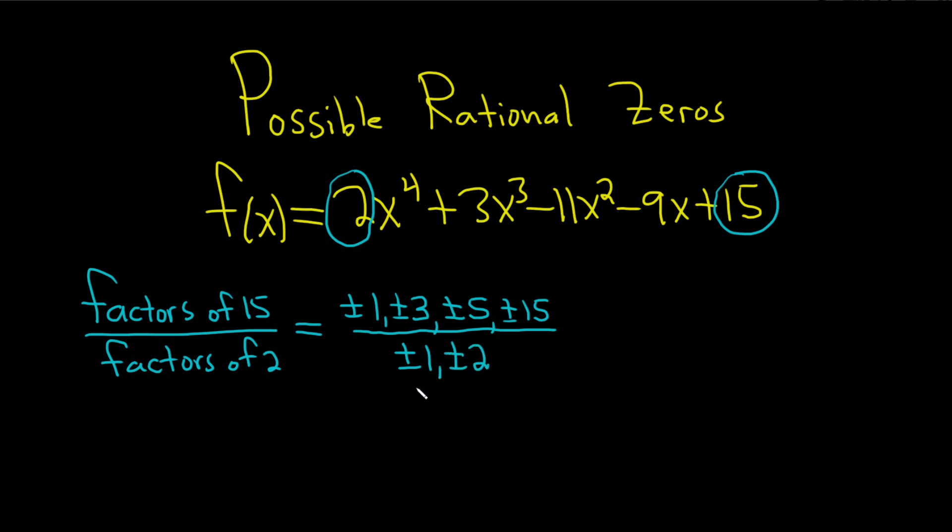So now we need an organized way to write the answer. The way I do it is as follows: I take this number here, the 1, and divide it by these. And then I go to the 3 and divide it by these. And then I go to the 5 and divide it by these. And then I go to the 15 and divide it by these.